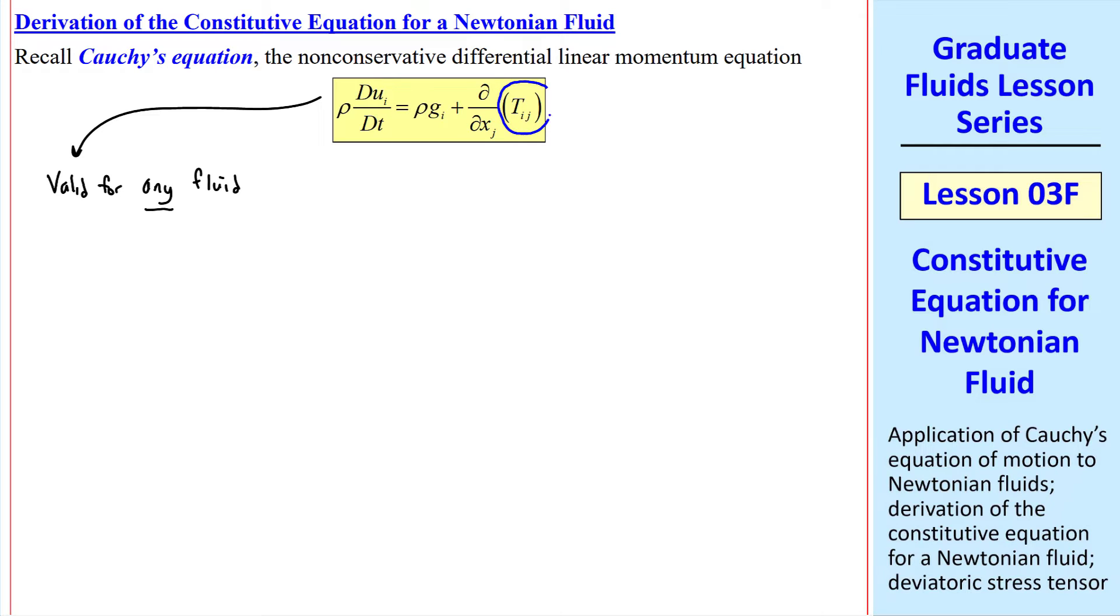The problem is this term, Tij, the stress tensor. Tij is not only unknown, but it's not one of our primary variables. Recall for the general case, we have the velocity vector, pressure, density, and temperature, which are our six primary unknowns or variables in the problem.